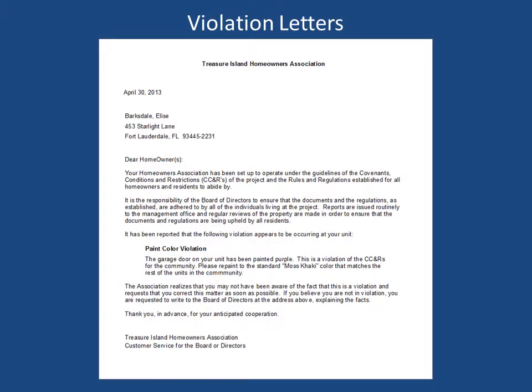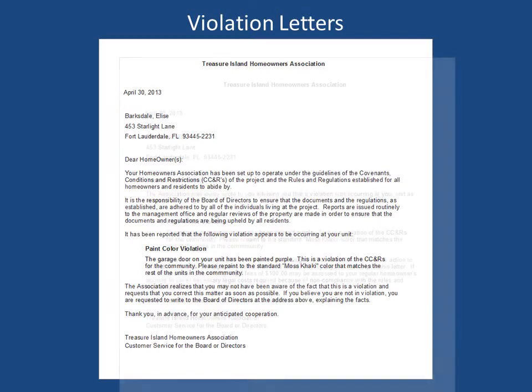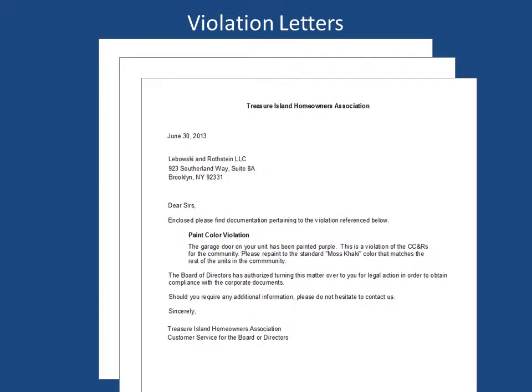Once the violation is saved, you have the option of printing violation letters. The owner name and address, property address, and violation description are merged automatically from the violation action item we just entered. Successive letters can be generated if the owner fails to comply, and the option is provided to send to the association attorney if necessary. Meerkat also contains several different violation form letters, which can be customized for each community association.